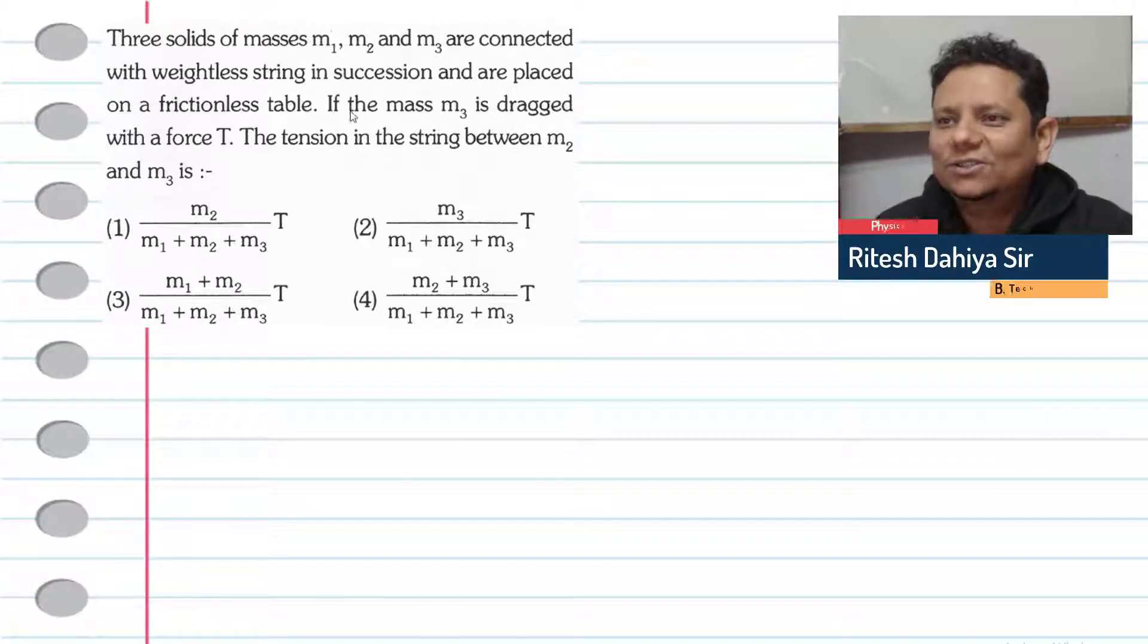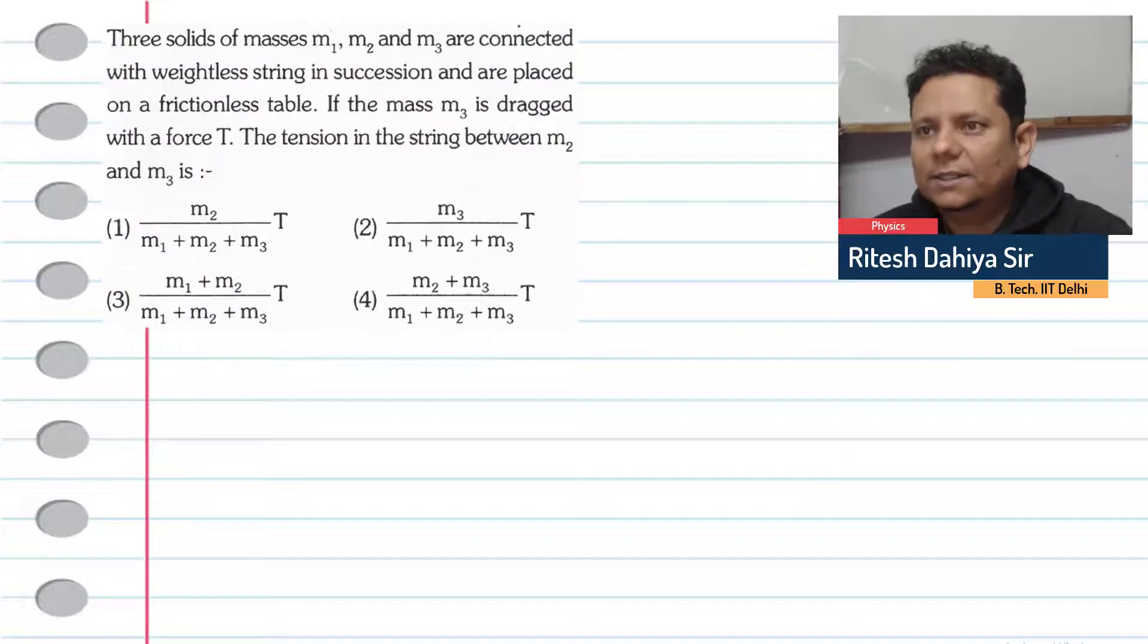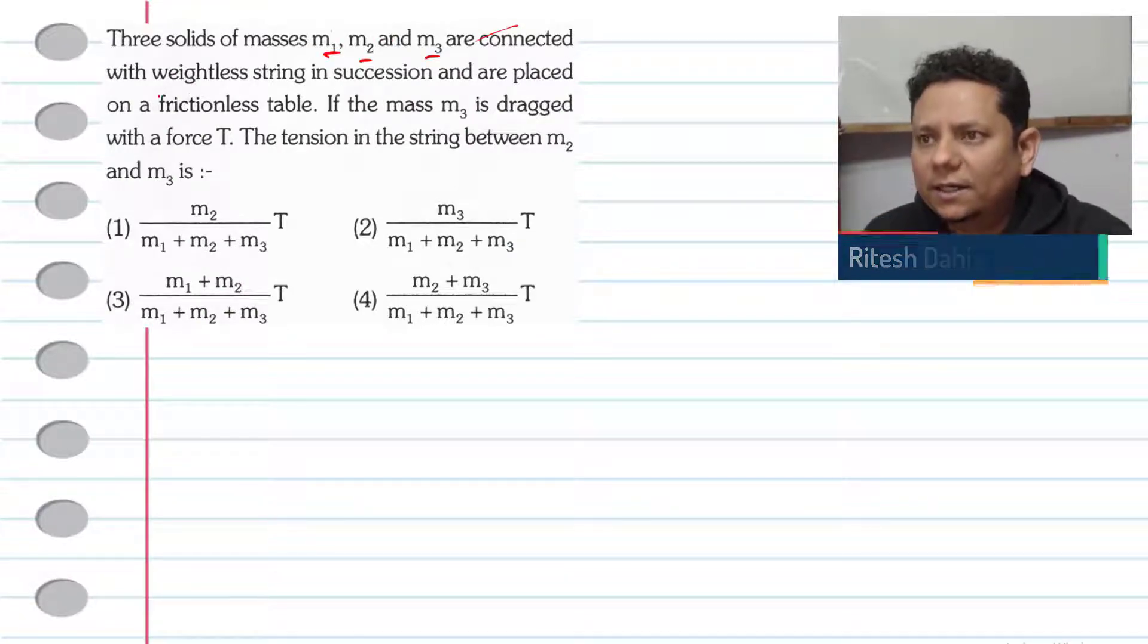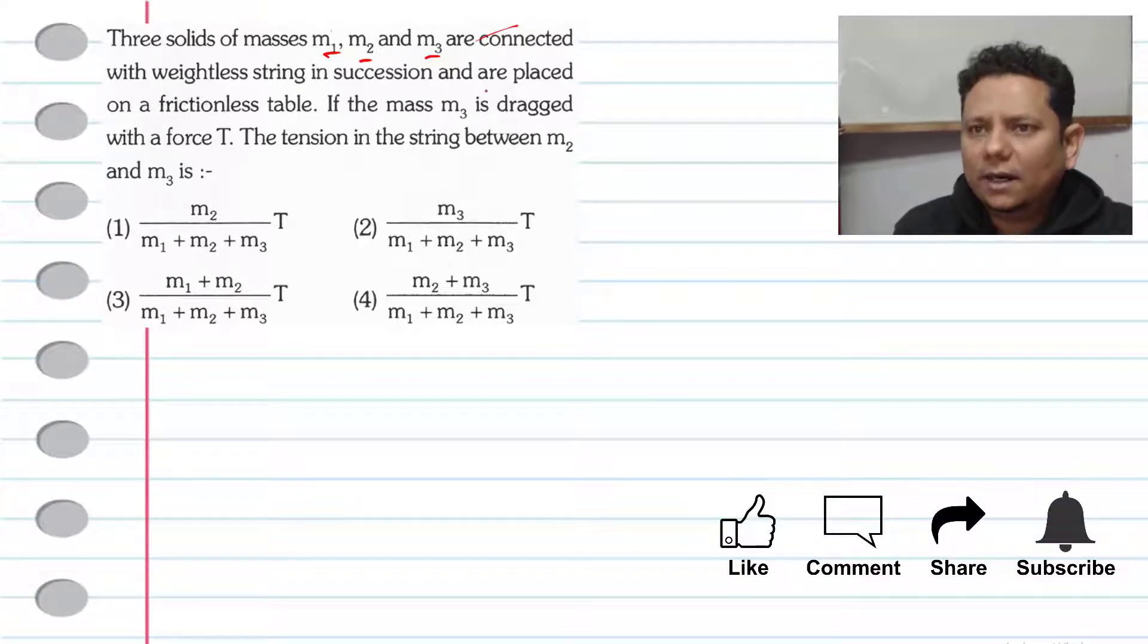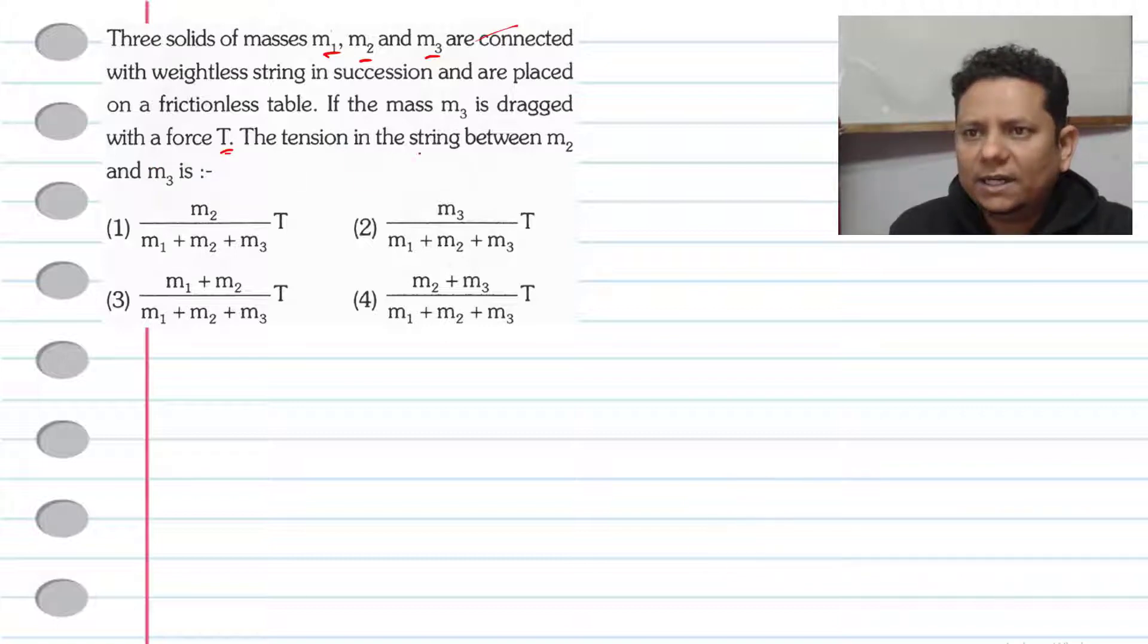Next question. The question says three solids of mass M1, M2, and M3 are connected with weightless strings in succession and are placed on a frictionless table. If the mass M3 is dragged with force T, the tension in the string between M2 and M3 will be.